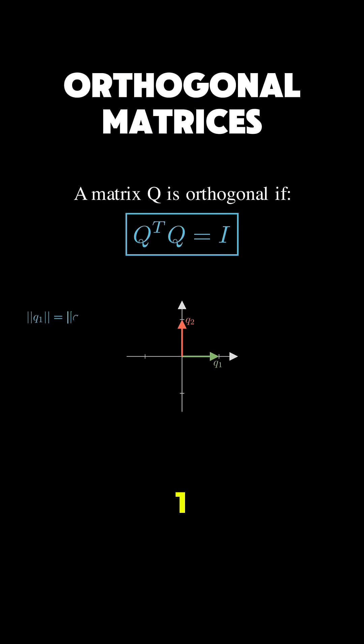Each has length 1, so the norm of Q1 equals the norm of Q2 which equals 1. And they are perpendicular, so their dot product Q1 dot Q2 equals 0.